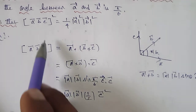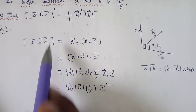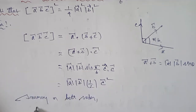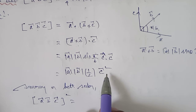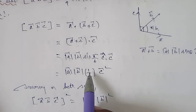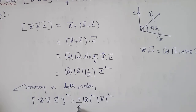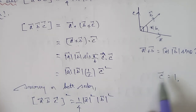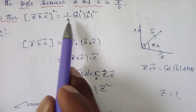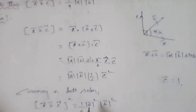Squaring on both sides: the box product [a vector, b vector, c vector] whole power square equals |A|² × |B|² × (1/2)² × |c|². Since c vector is a unit vector, |c|² equals 1, and (1/2)² = 1/4. Therefore the box product squared equals 1/4 × |a vector|² × |b vector|². This completes the proof.